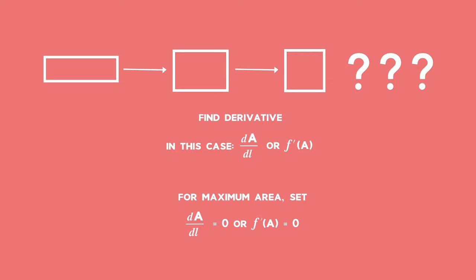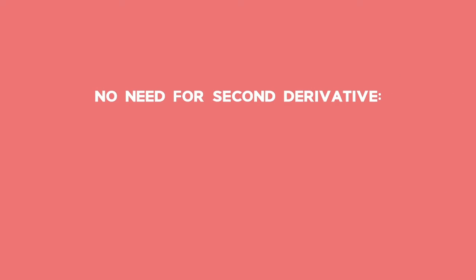Often, results are obvious, so we do not use the second derivative. For example, if one of the side lengths of the rectangle is zero, it would not give a maximum area.